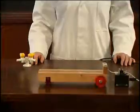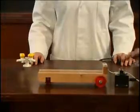What happens if an object has a constant velocity? This trolley has a constant velocity and the dots produced by the ticker tape are regular.